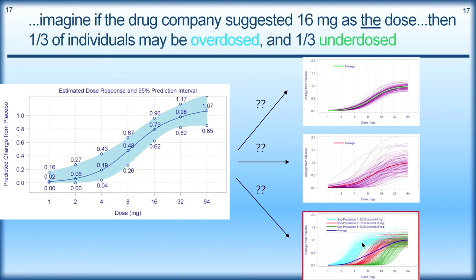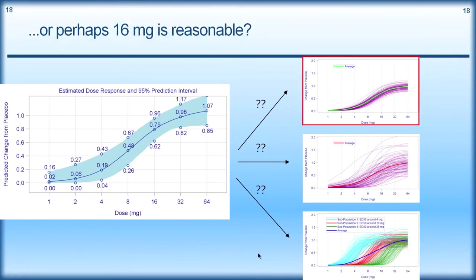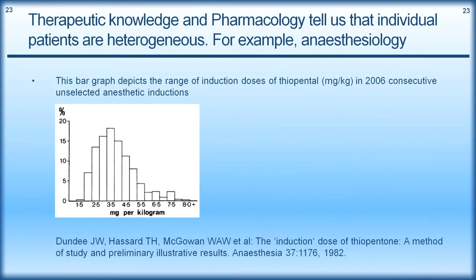And perhaps 16 is still suboptimal for the third subpopulation. Or indeed, if all the individual dose response curves are quite similar, 16 milligrams may be a very good dose. Therapeutic area knowledge and pharmacology tell us that individual patients are heterogeneous. A great place to look is anesthesiology — here we see the distribution of doses required for an anesthetic agent across 2006 individuals, and the amount of drug needed varies very widely across individuals. The idea that we would all need the same amount of anesthetic is misguided.